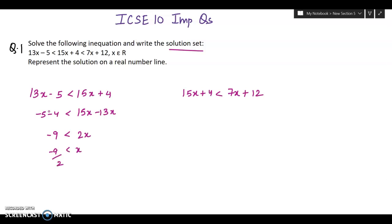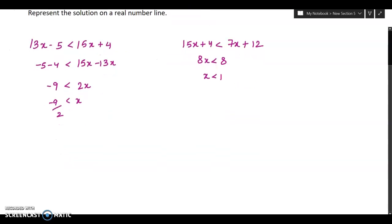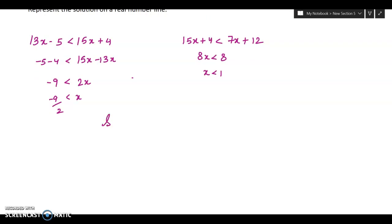In this case, 15x minus 7x will be 8x and 12 minus 4 will be 8. That means x is less than 1. Now we will draw the solution set. Solution set will be x is from minus 9 by 2 to 1, and it belongs to real numbers.